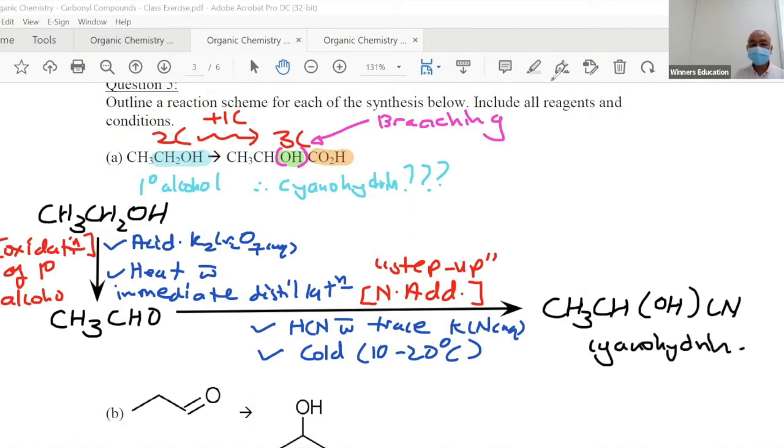If you look at the product they want, there's a carboxylic acid. Remember, cyanohydrin doesn't end there - it usually undergoes one of the three: acid, alkaline hydrolysis, or reduction. So this is your acidic hydrolysis.